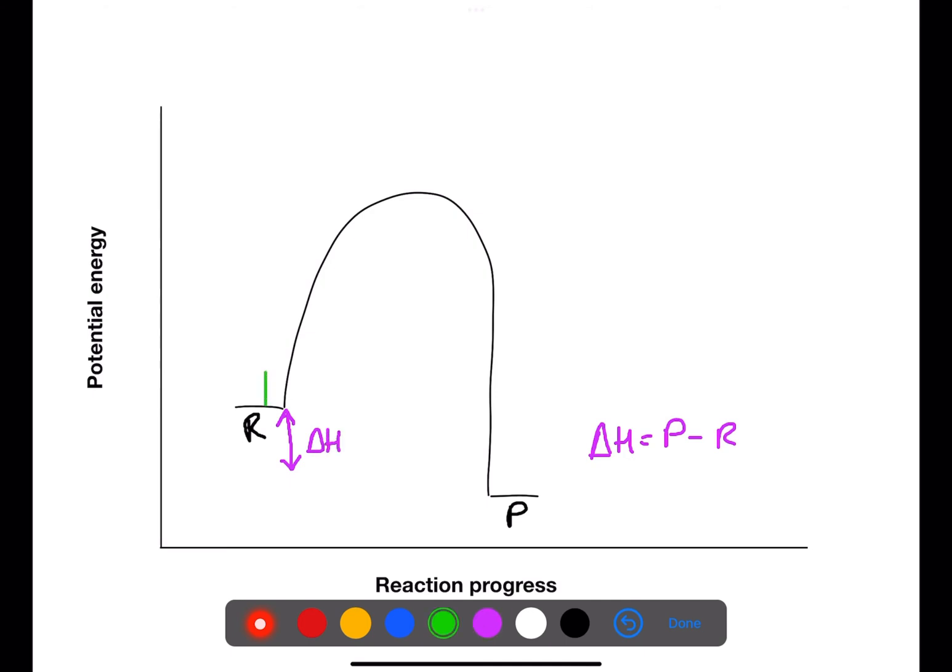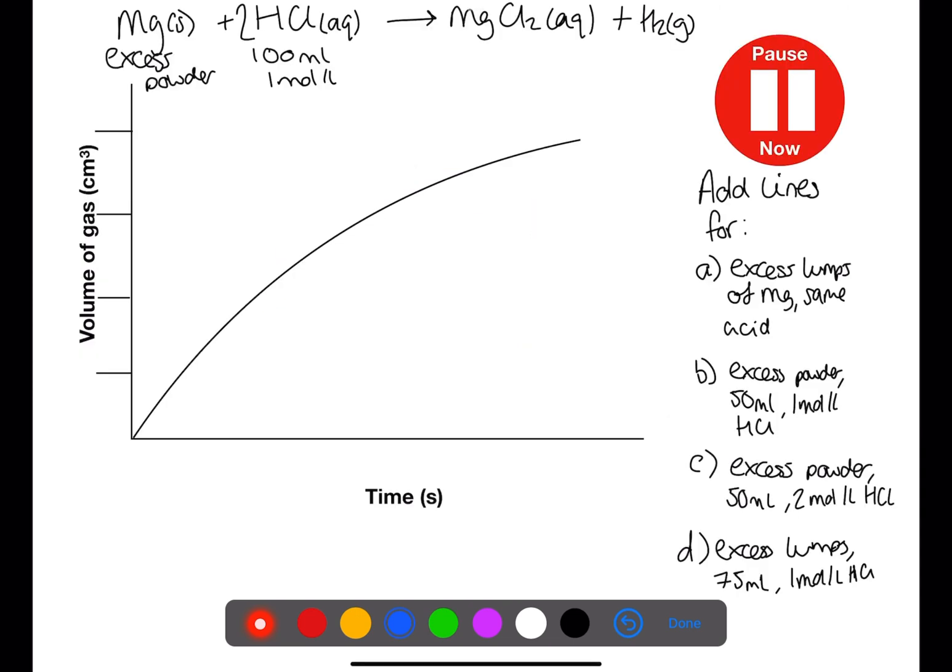We can also calculate the activation energy for both the forward and reverse reaction. It is the distance from the reactants to the top of the hill for the forward reaction, and the distance from the products to the top of the hill for the backwards reaction. Addition of a catalyst will make this value lower for both reactions. Pause the video now and try the following questions.